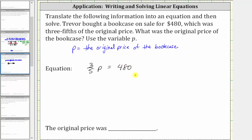And now if we solve the equation for p, we can determine the original price of the bookcase. In order to solve the equation, we need to isolate p on one side of the equation. And since three-fifths p means three-fifths times p, we're probably thinking we should divide both sides by three-fifths, which is true, but dividing by a fraction is equivalent to multiplying by the reciprocal. And therefore, instead of dividing both sides by three-fifths, we will multiply both sides of the equation by the reciprocal of three-fifths, which is five-thirds.